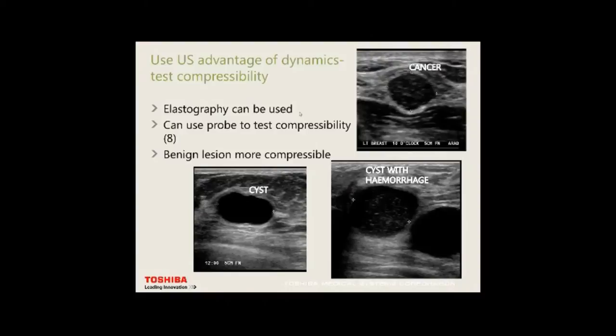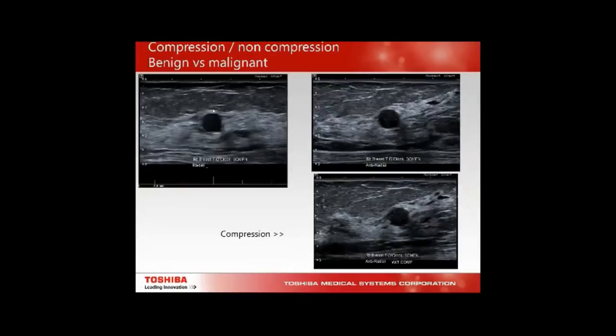Use the ultrasound advantage of dynamics and test compressibility. Elastography can be used if available. With the probe tilting over a cancer, it will drag tissue with it. With a cyst, tissue is pushed away — not eaten through like the little ducts. A cyst with haemorrhage can show mobile content on ballottement. One patient with multiple breast cysts had a solid lesion that appeared to have spiculated edges on rotation — this proved to be breast cancer.